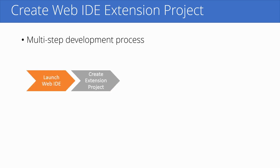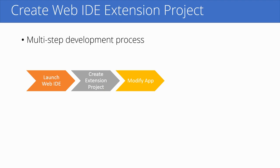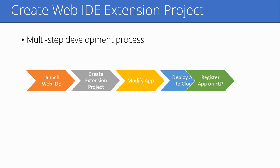Then we actually do the modifications. We'll change the code and use a graphical editor to do that. And then ultimately, we'll deploy the app to the cloud and then register the app on the Fiori Launchpad (FLP) so that other users can use it. That's the whole development process — five different steps. We're going to go through all of these together.